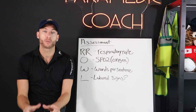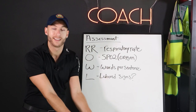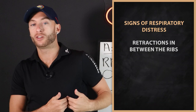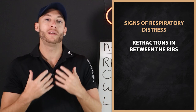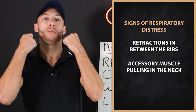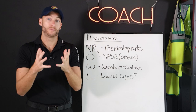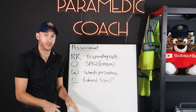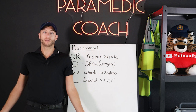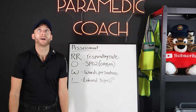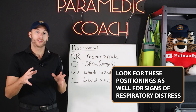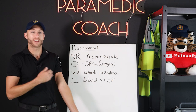L is for labored signs — do we see signs of respiratory distress? Respiratory distress signs include retractions between the ribs and accessory muscle use, pulling in the neck. Also look at positioning: if someone is bolt upright or in a tripod position, they're trying to get more of a breath. Look for these positioning signs, and don't forget the skin too.